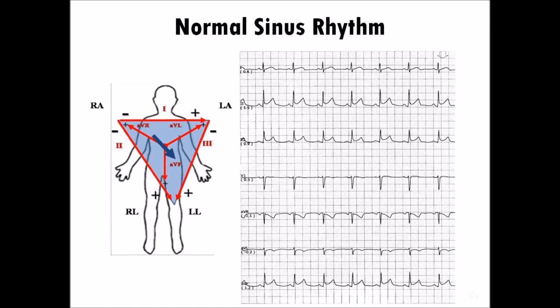The two groups of limb leads are bipolar limb leads, namely 1, 2, and 3, and augmented unipolar limb leads, namely AVR, AVL, and AVF. Because there are so many patients to be monitored, only one or two leads are displayed for arrhythmia monitoring. The electrodes are attached to extremities when doing 12 leads, or to the body for telemetry monitoring. In most EKG arrhythmia tests, lead 2 is used.